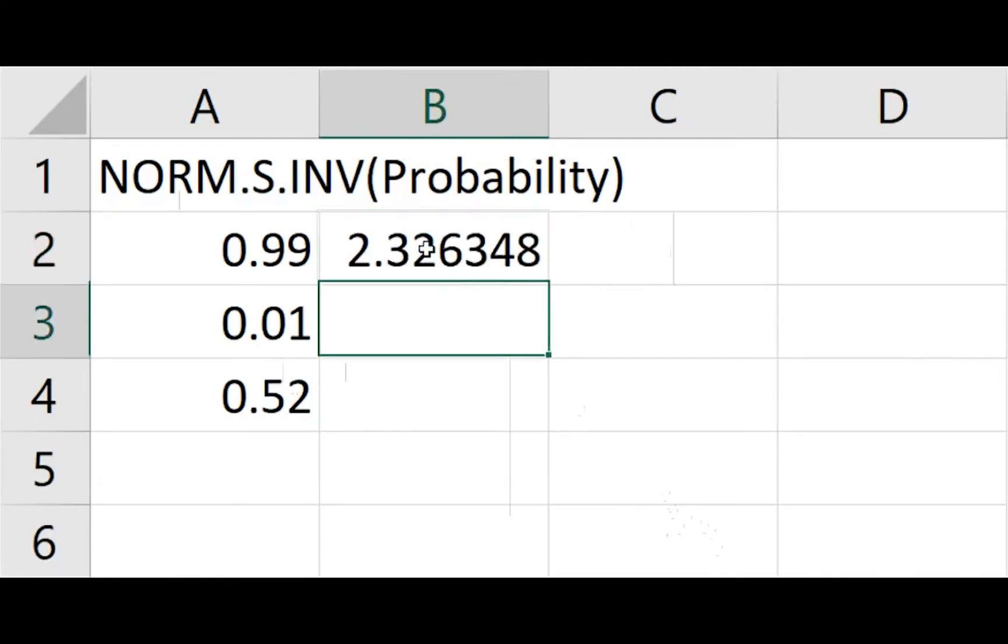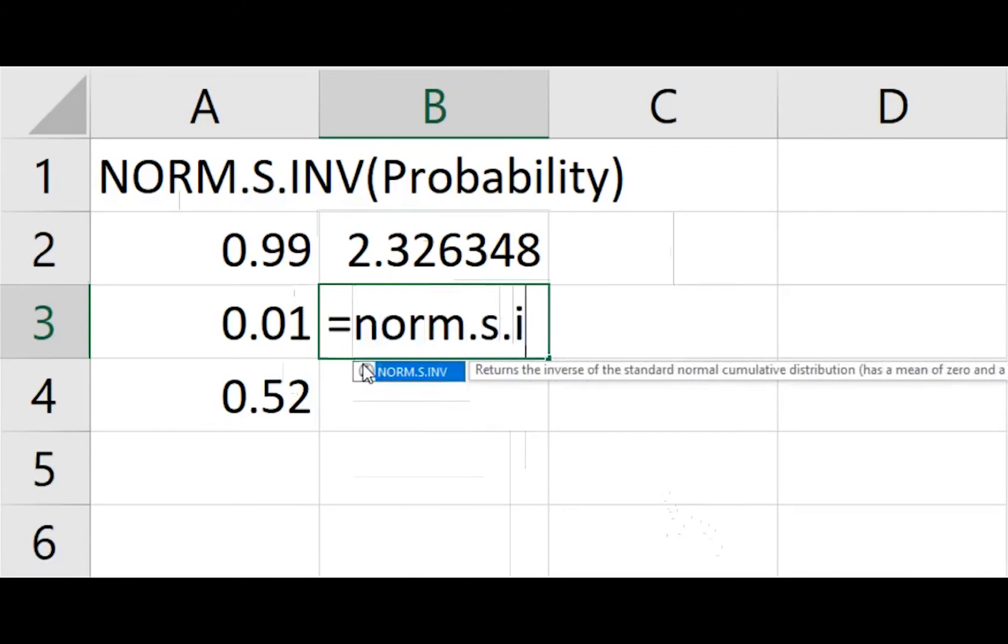You can also put in the percentage instead of the decimal. So in this case, I will put in 1%, and you'll see it works just as well. So 1% has a z value of negative 2.32.